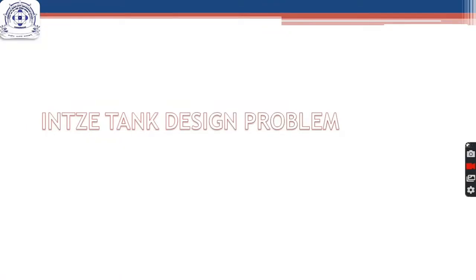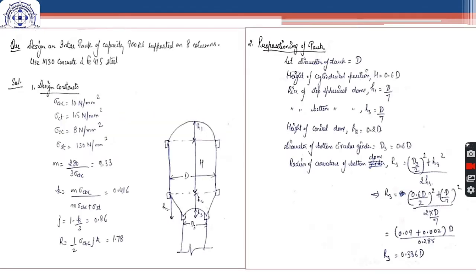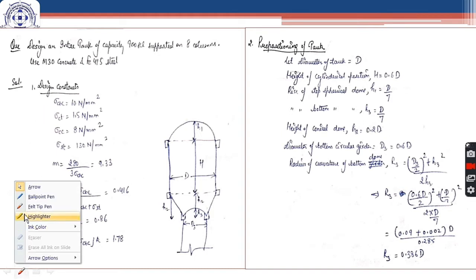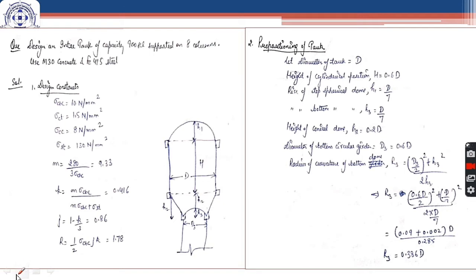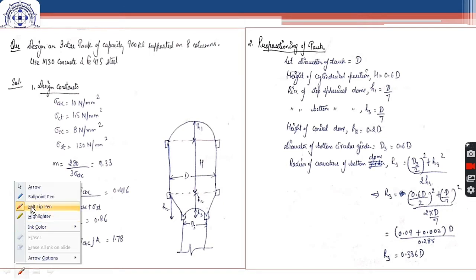In continuation of the previous lectures, we look at a solved design problem of an Intze tank. In this question, we have to design an Intze tank of capacity 900 kiloliters of water, which is supported on 8 columns. We will design all the components of the Intze tank based on this data. As we are designing all types of tanks on the basis of the working stress method, we first calculate all the design constants used for calculations.